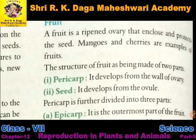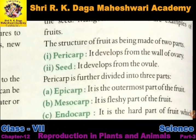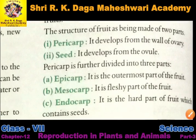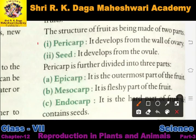Mango aur cherries ke example hain — mango ke andar bhi seed nikalti hai, cherries mein bhi. Bahut saare aise plants hote hain jinme andar se seed milta hai. The structure of a fruit is made of two parts.